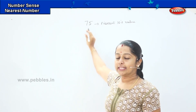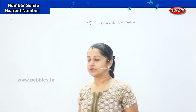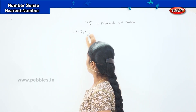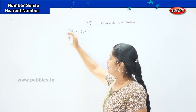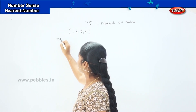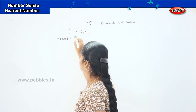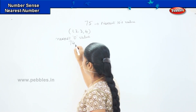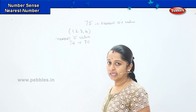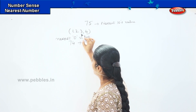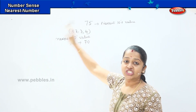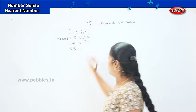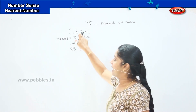Before that, there is an important rule which you have to keep in mind. Whenever a number ends in 1, 2, 3, or 4, we will make it go to the nearest zero value. For example, if I have a number 74, the nearest tens will be 70. When a number ends with 4, 3, 2, or 1, I shift it to the nearest tens value. Similarly, if I have 83, my nearest tens value will be 80, because the ones digit is less than 5.